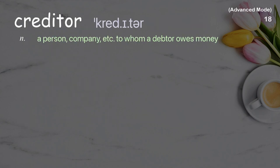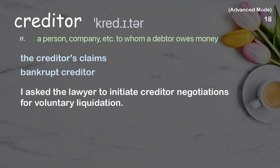Creditor: a person, company, etc. to whom a debtor owes money. Examples: the creditor's claims. Bankrupt creditor. I asked the lawyer to initiate creditor negotiations for voluntary liquidation.